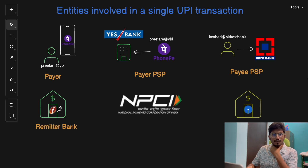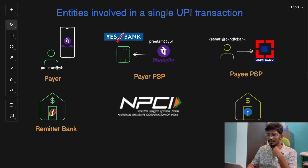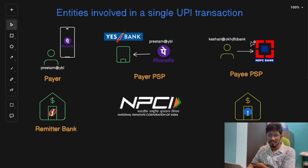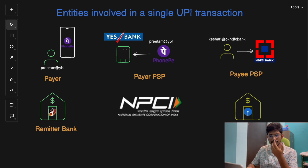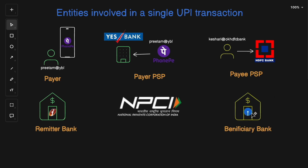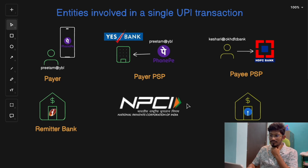The third entity is the Payee PSP — the Payment Service Provider used by the payee's VPA. Let's say 'pritham@ybl' is paying to UPI address 'kasari@hdfc'. Here HDFC Bank is the PSP for the payee Kasari. The next entity is the Remitter Bank — the bank where the payer's account is held, which you have linked in your UPI app, let's say ICICI Bank. The fifth entity is the Beneficiary Bank — the payee's bank account where money is being credited, for example, the payee's SBI account linked to their UPI app.